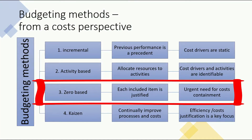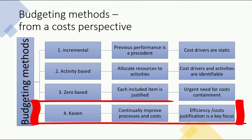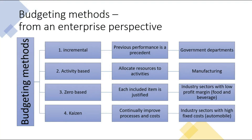Zero-based budgeting method is where each item is included and justified in the budget plan. It is used when there's an urgent need for cost containment. Kaizen budget method is about continually improving processes and costs. It intends to accomplish efficiency, and cost justification is a key focus.